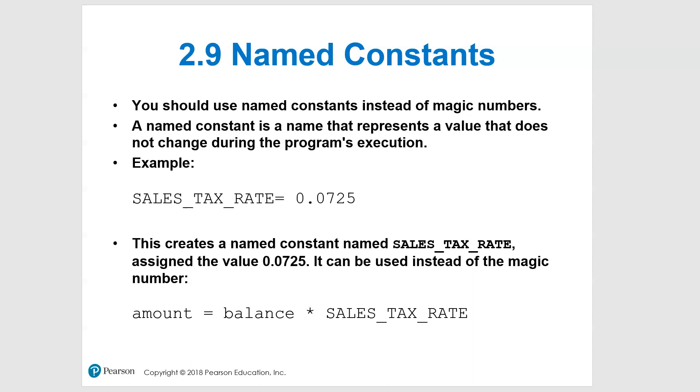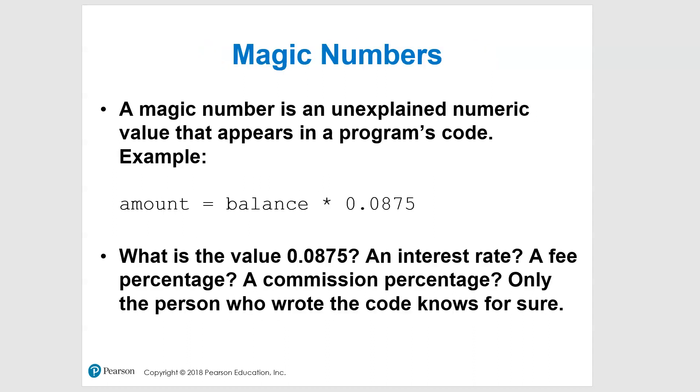I wanted to tie that into this section, so I'm going to back up two slides and stop right here and take a look at the definition of magic numbers. A magic number is an unexplained numeric value that appears in a program's code.